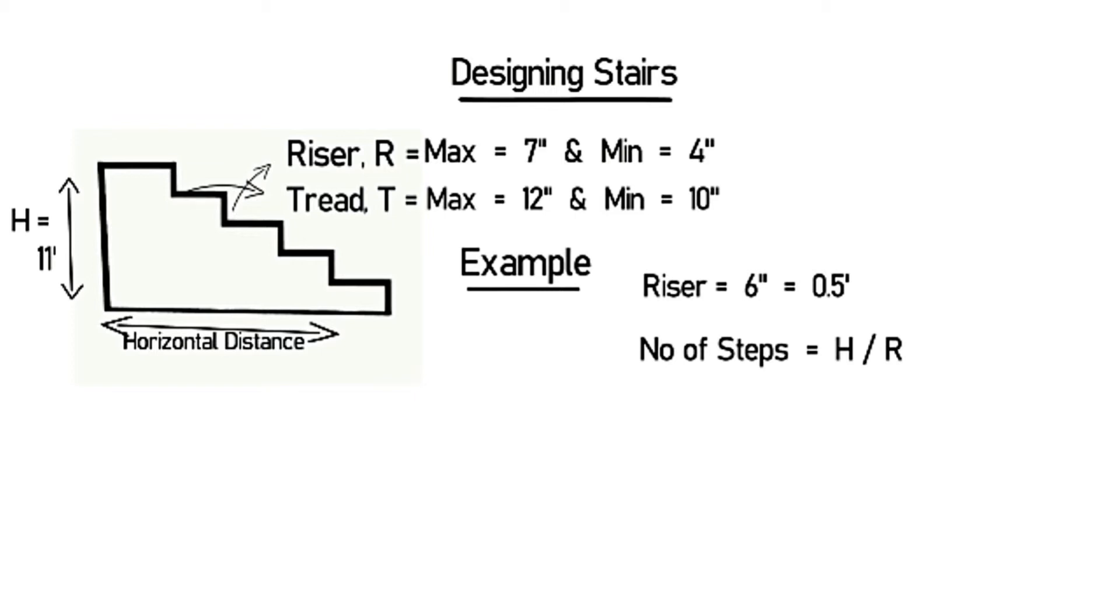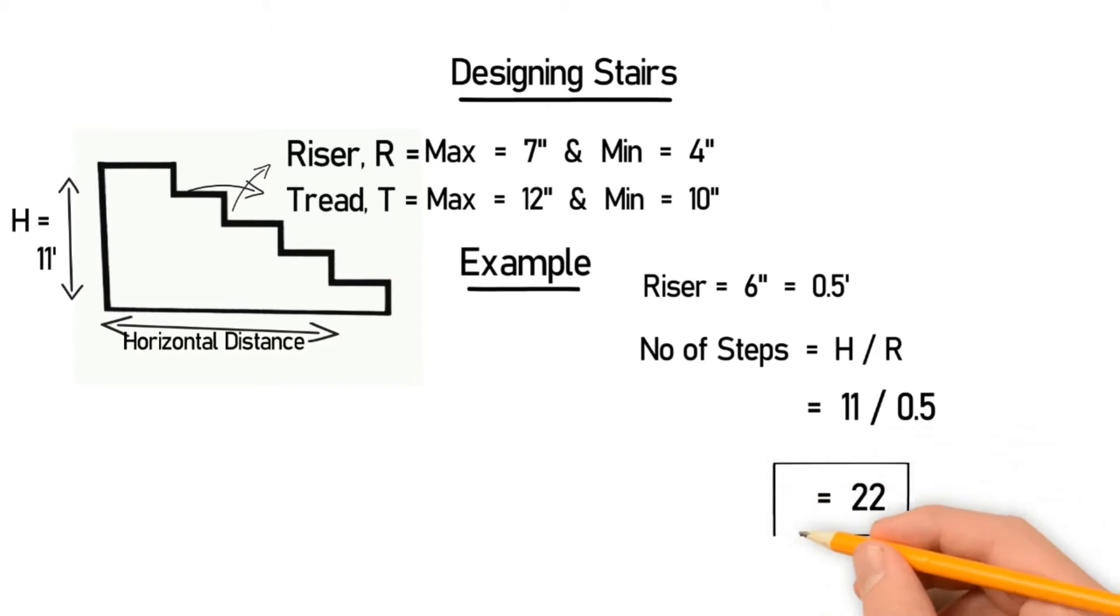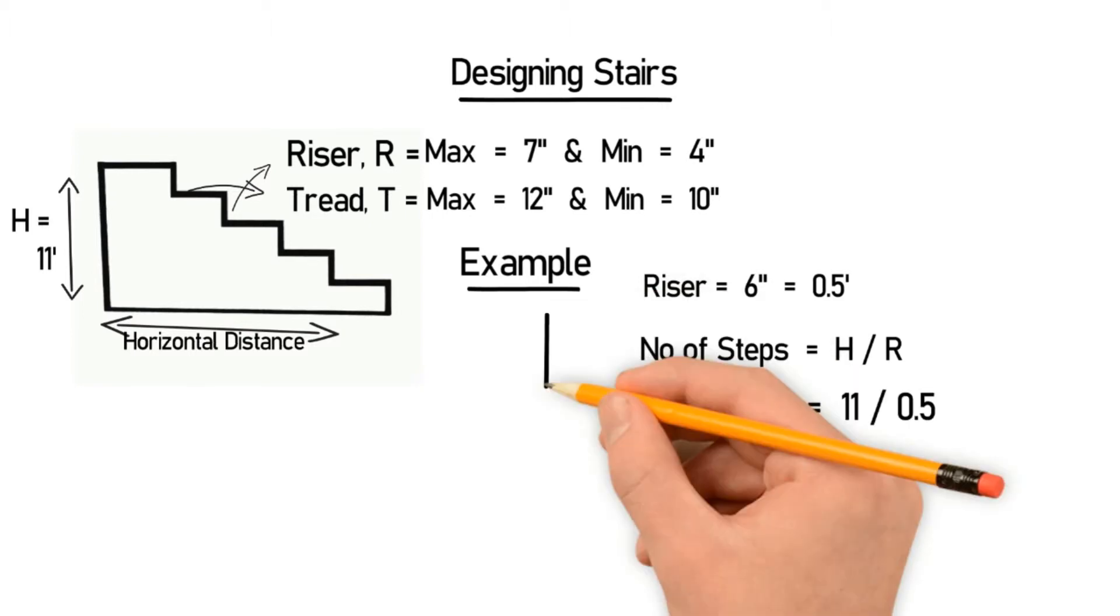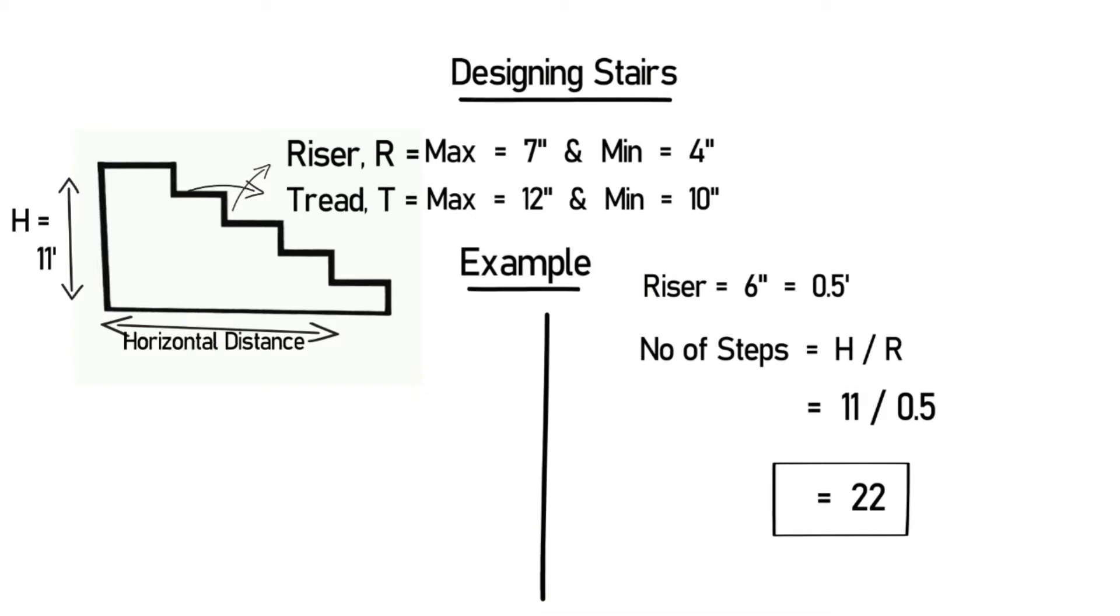Let's put this into the formula and you will get 11 divided by 0.5 which is equal to 22. So the number of steps required will be 22.